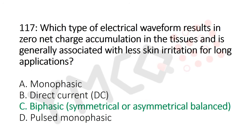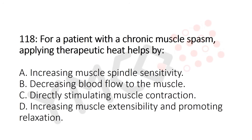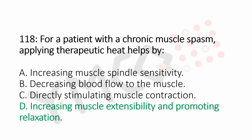Question number 118: For a patient with chronic muscle spasm, applying therapeutic heat helps by: Option A: increasing the muscle spindle sensitivity. Option B: decreasing blood flow to the muscle. Option C: directly stimulating muscle contraction. Option D: increasing muscle extensibility and promoting relaxation. And the answer is Option D: increasing muscle extensibility and promoting relaxation.